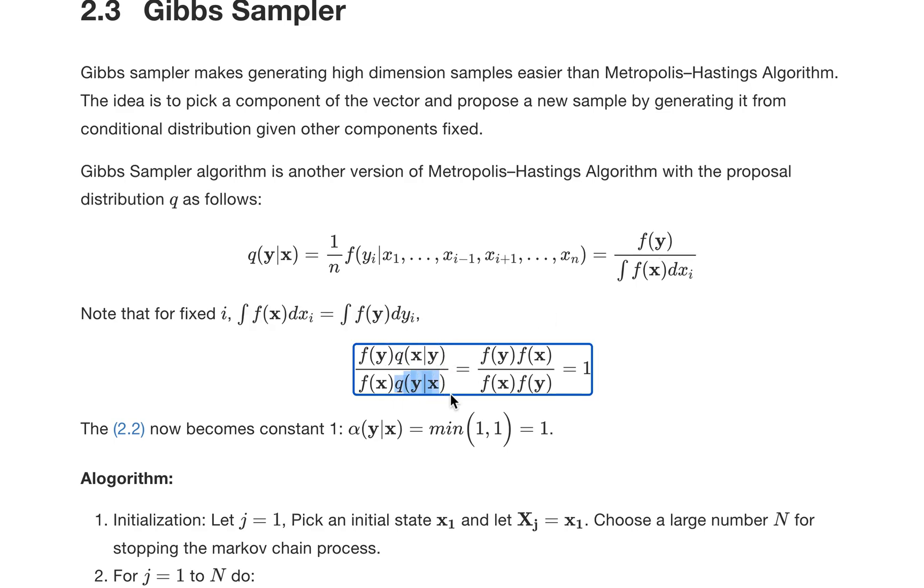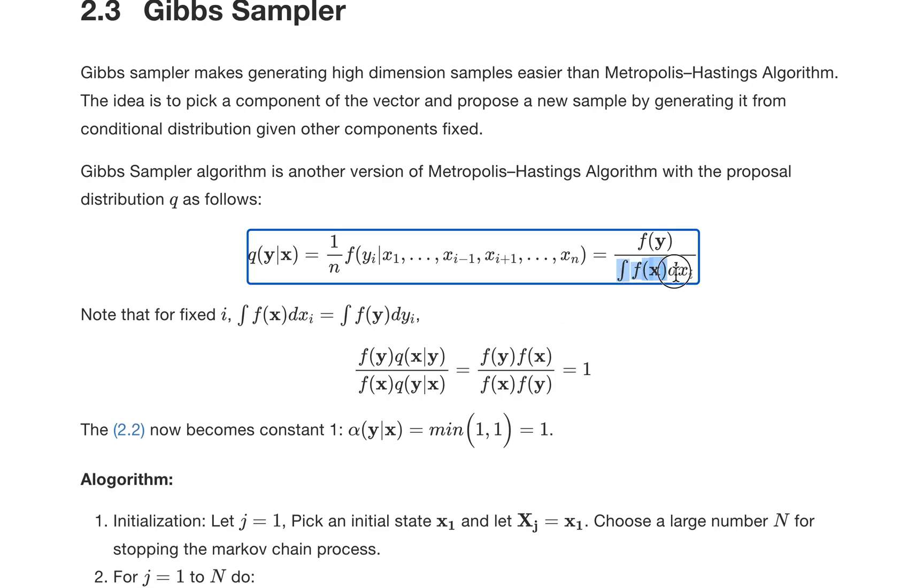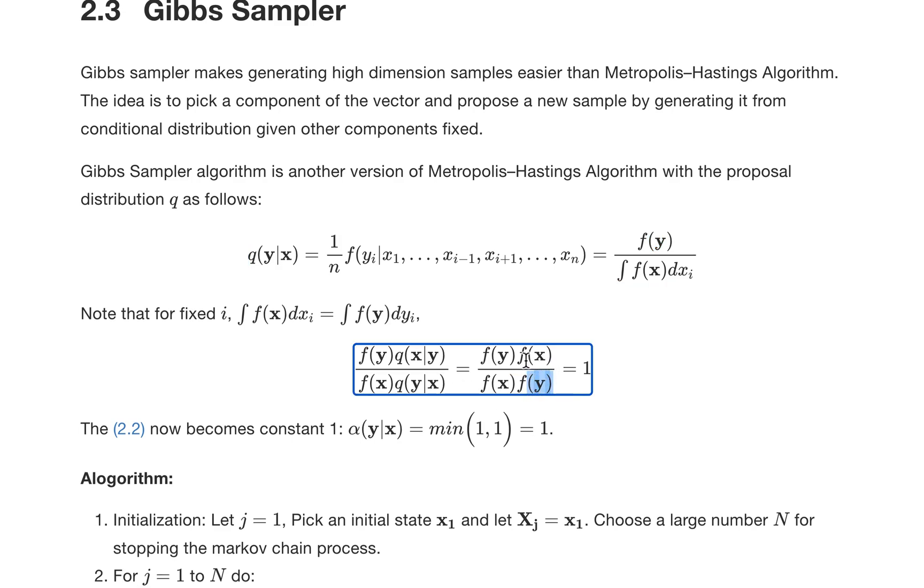In that case, the upper one and lower one q, their denominators are cancelled, and what we're left with here is just f(y) and f(x). Those terms will just be cancelled and that will be just one.